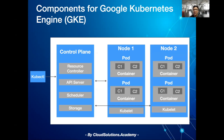In this diagram you have a single cluster which comprises of two nodes. Each node runs two pods, and each pod runs two containers. Pods are the smallest deployable unit in Kubernetes. Think of a pod as a Kubernetes abstraction which wraps the containers. Containers in the same pod will share the same resources and local network, and can easily communicate with each other.